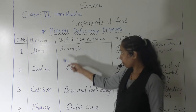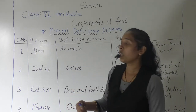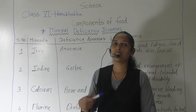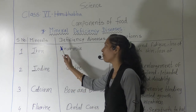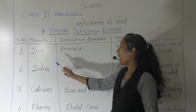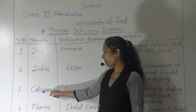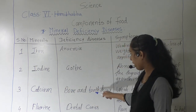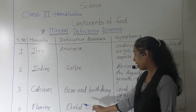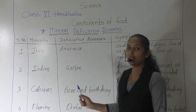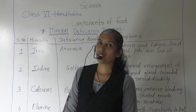So these are only a few minerals we discussed here, but there are many other minerals that the body requires. Today we discussed: iron — deficiency disease is anemia; iodine — deficiency disease is goiter; calcium — deficiency disease is bone and tooth decay; and fluorine — deficiency disease is dental cavities. Today we discussed these mineral deficiency diseases. Next time we will continue in the next video.